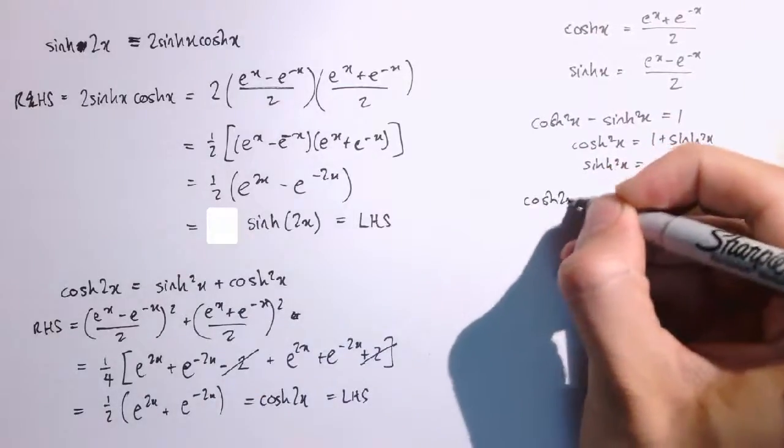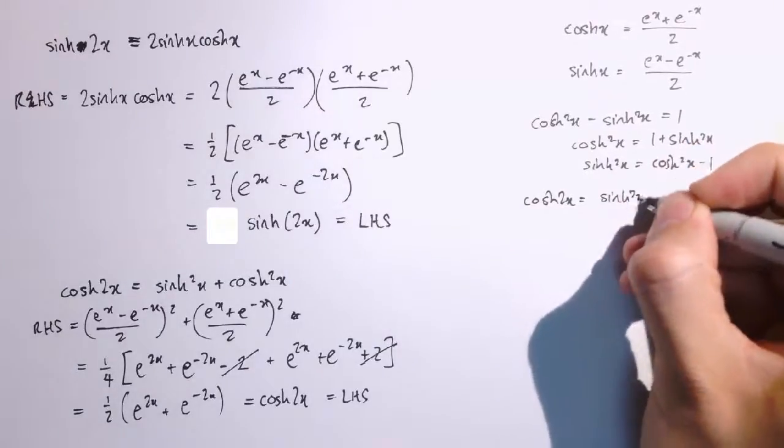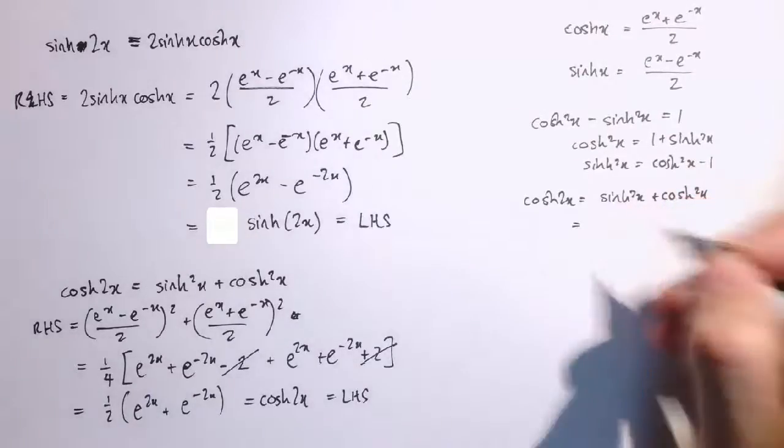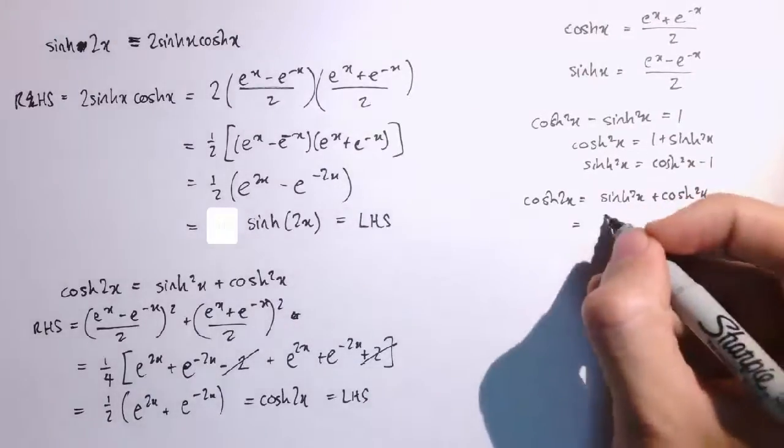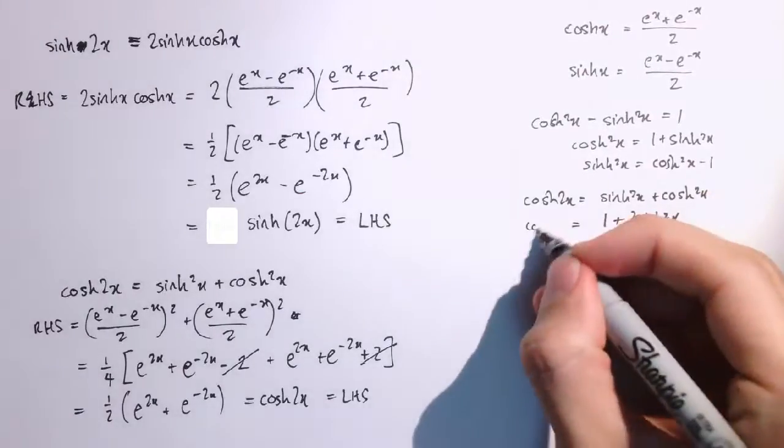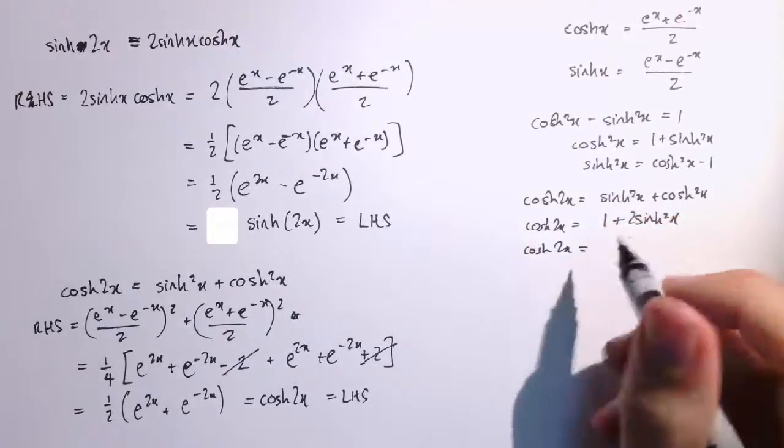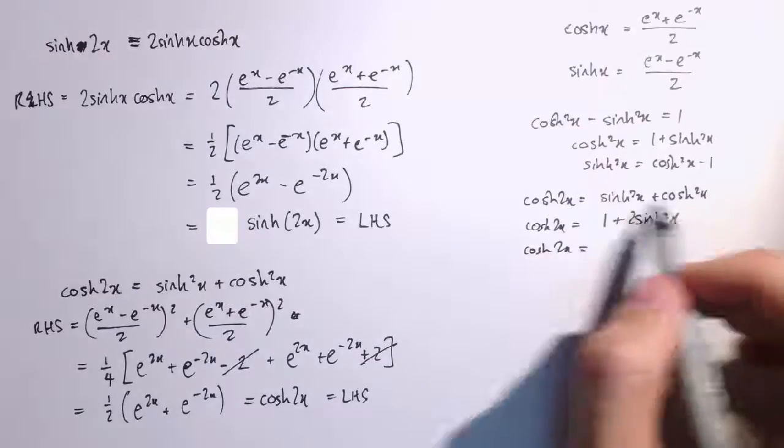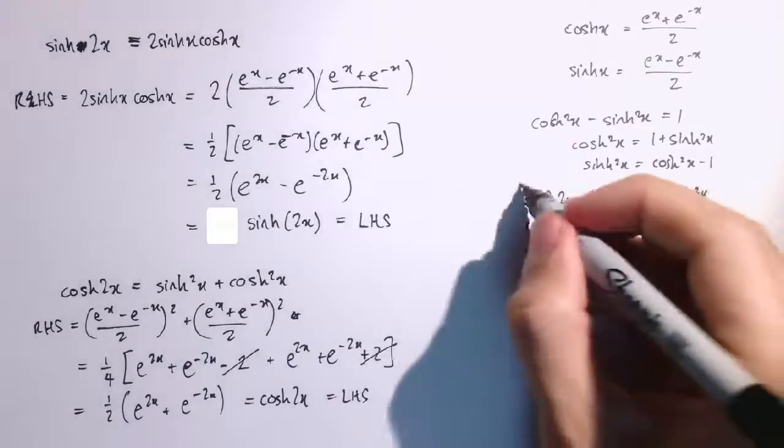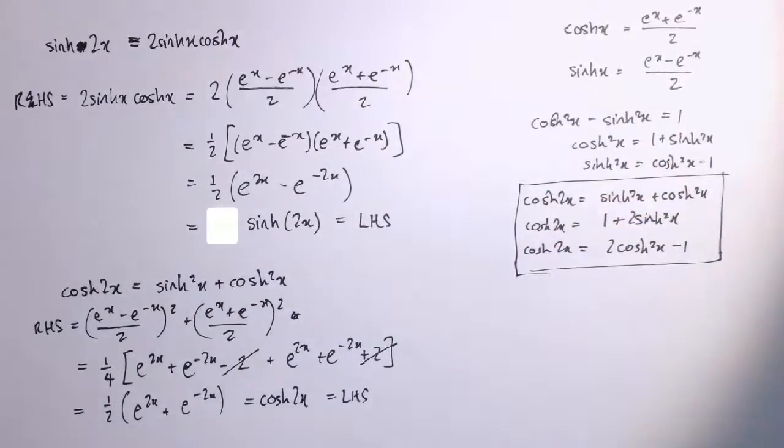And what that allows me to do is to say that cosh of 2x, which was sinh squared x plus cosh squared x, I can either replace cosh squared with 1 plus sinh squared and get 1 plus 2 sinh squared x, or I could replace it instead, I could do it the other way, I could replace sinh squared with cosh squared minus 1, and I would get 2 cosh squared x minus 1, so sort of three identities all in one there for cosh 2x.